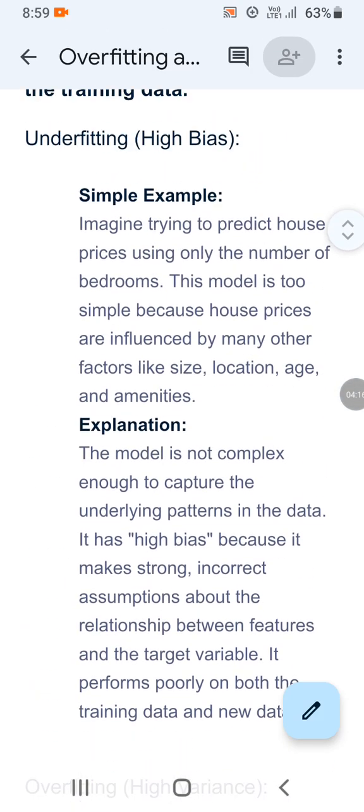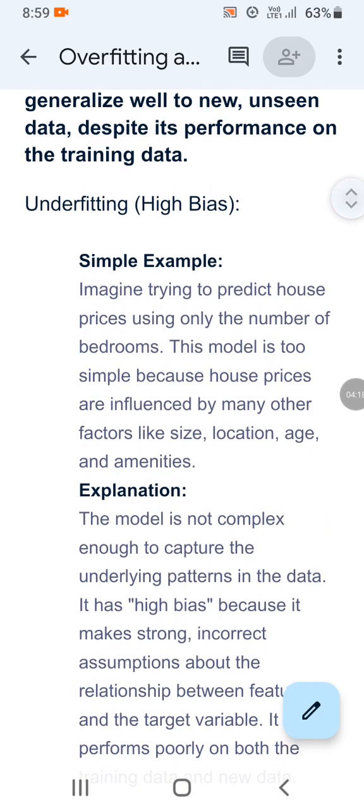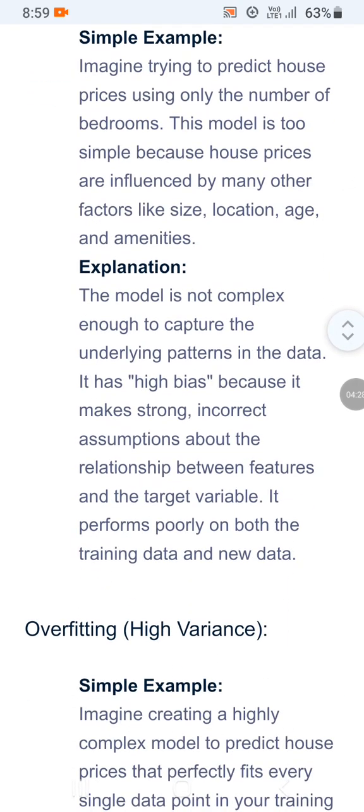If the data is not trained in a proper way, that is underfitting. If the data is trained well but the model cannot handle new or exceeded data expected by the user — that is overfitting, the concept of high variance. The house prediction is the best example of both.